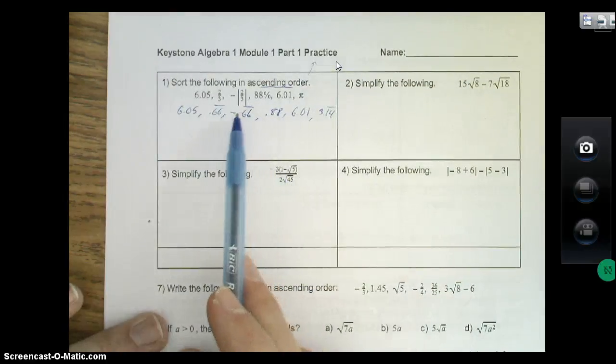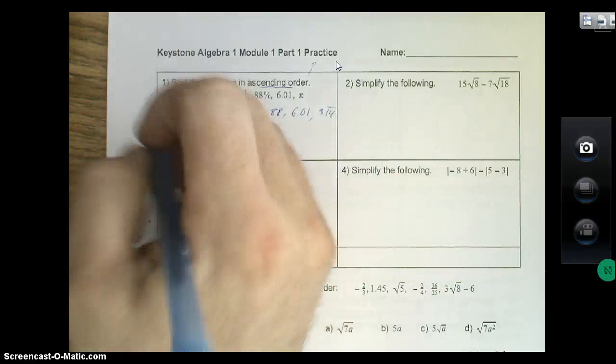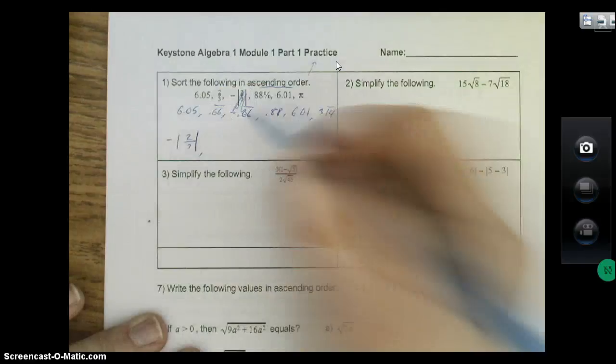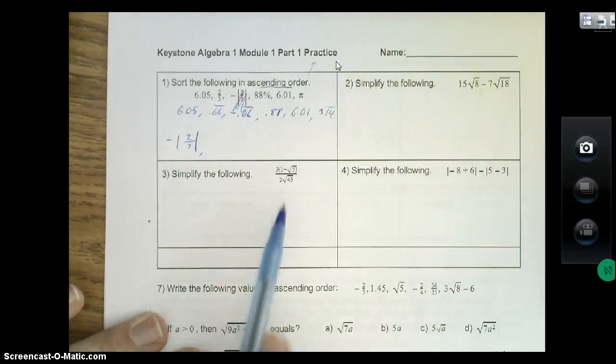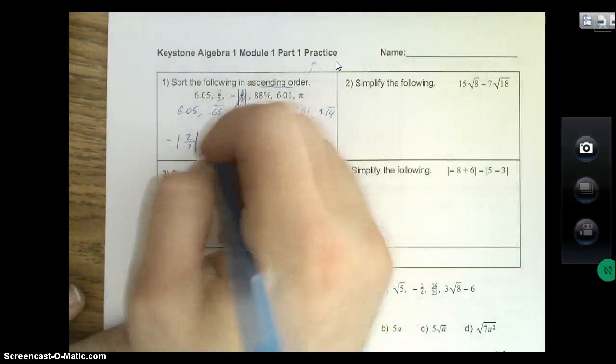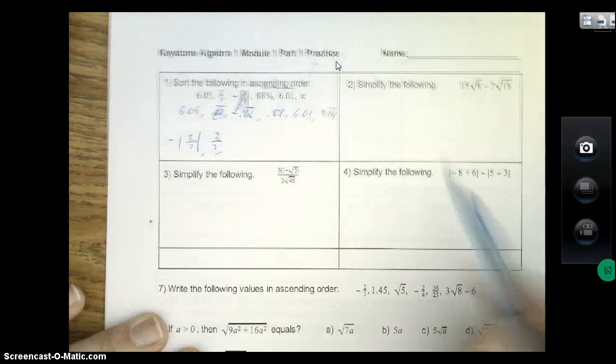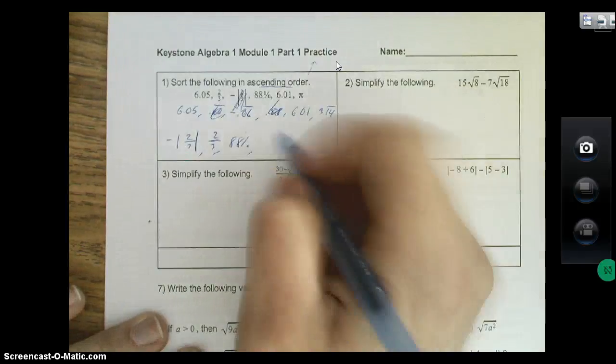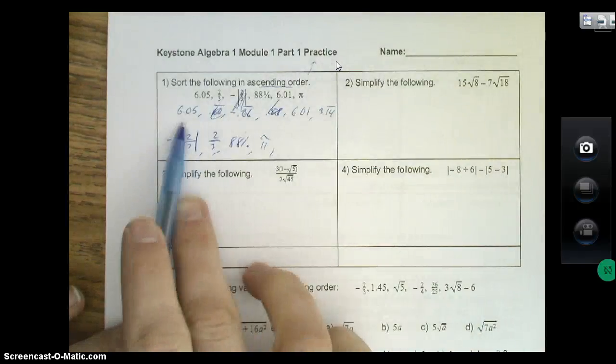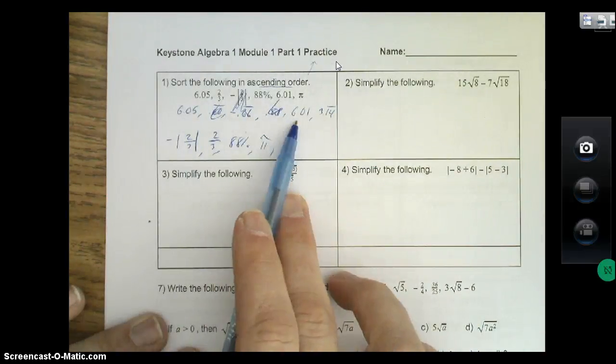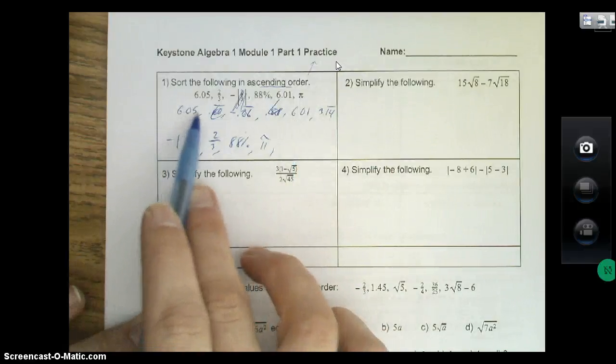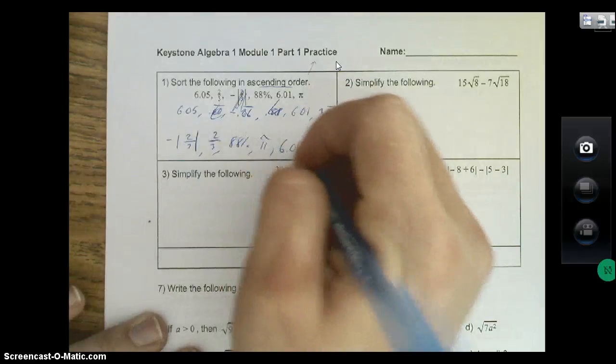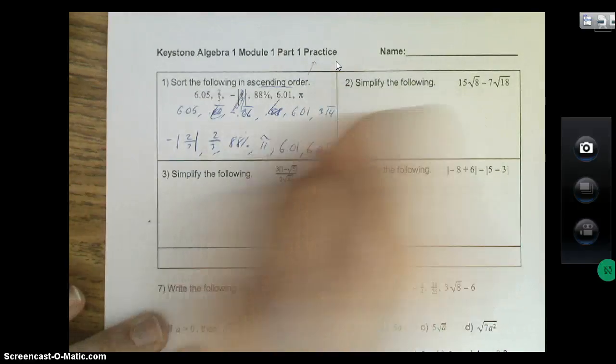So from smallest to biggest, your smallest number is the negative one, so I'm going to write this down as negative absolute value of two-thirds. I like to cross it off because I get confused if I don't. My next smallest number is 0.66, there's your two-thirds. Then we got 0.88 or 88%. Now 3.14, your pi, is next. Between 6.05 and 6.01, the larger number is actually 6.05 because in the hundredths place five is bigger than one, so 6.01 goes first and then 6.05 is last.